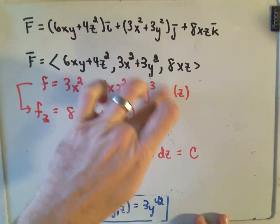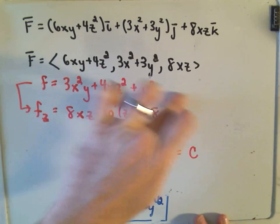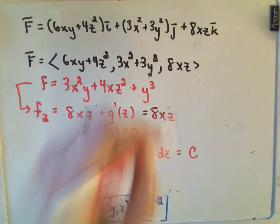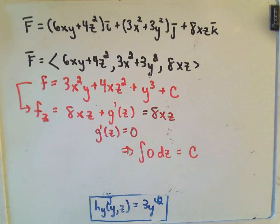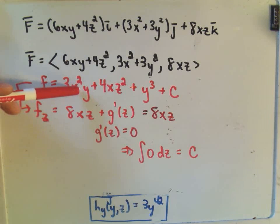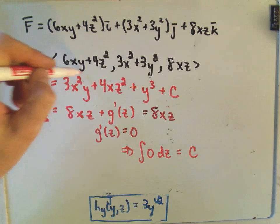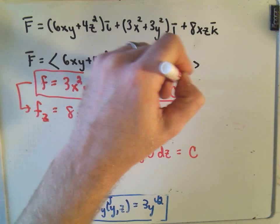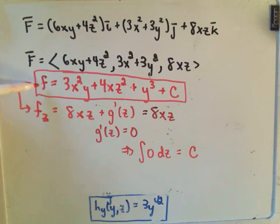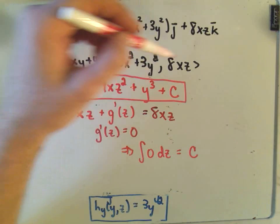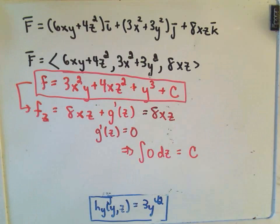So our potential function — a general potential function — is f = 3x²y + 4xz² + y³ + C. You can verify by taking the partial derivative with respect to x, y, and z to confirm you get each of the respective components back.